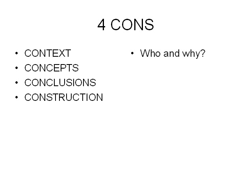Context, first of all — who and why. Whenever you're describing a psychological theory you'll need to know who came up with it, and theories don't come out of nowhere; they are developed because there's a need for them, so the background to a theory is part of the description of it. Concepts tends to mean terminology — most theories have got some key phrases and terms which are either unique to them or used differently from how those words are normally used in psychology.